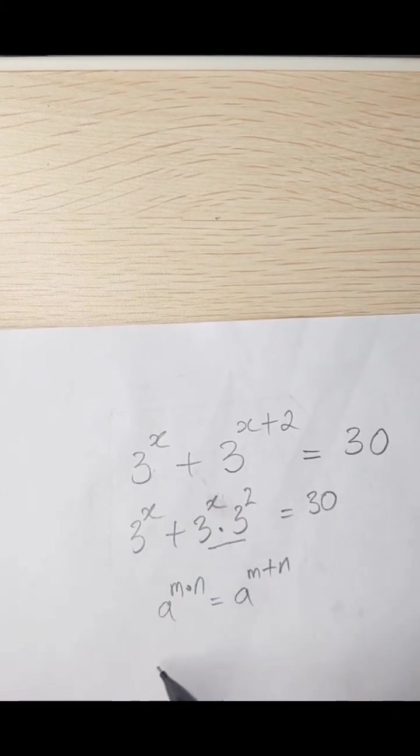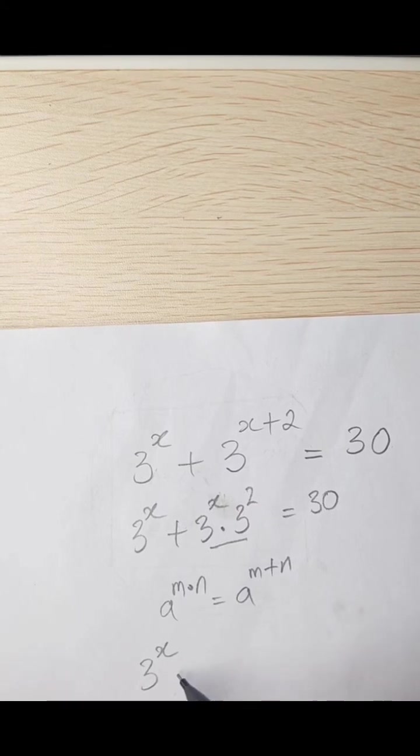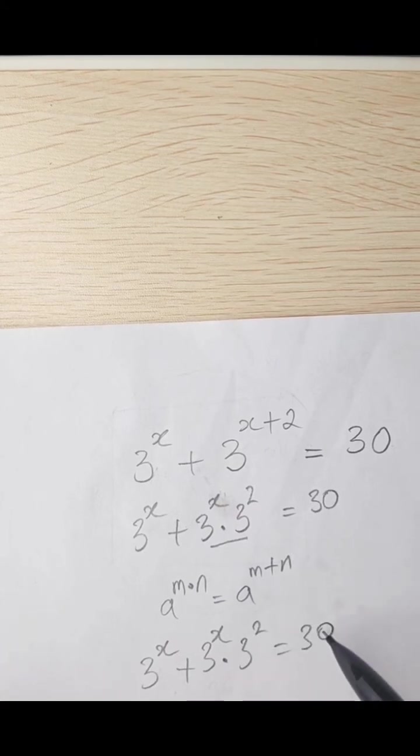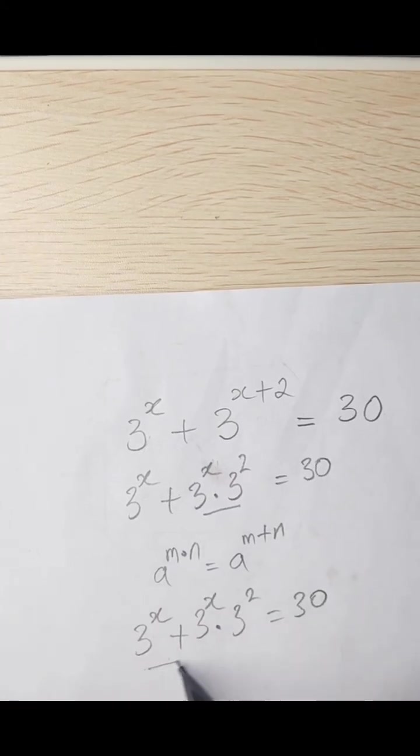So now we have that 3 raised to the power x plus 3 raised to the power x dot 3 squared is equal to 30. So we can collect like terms here.